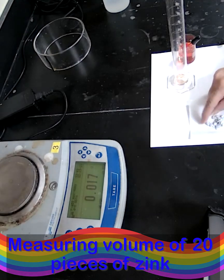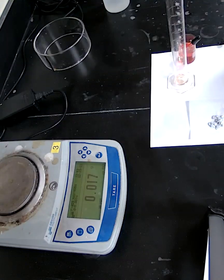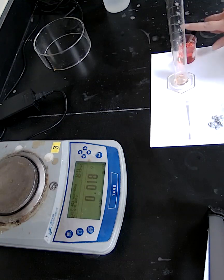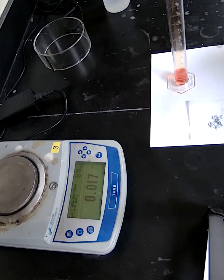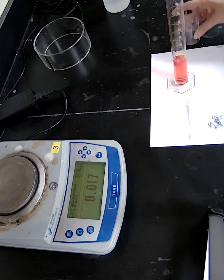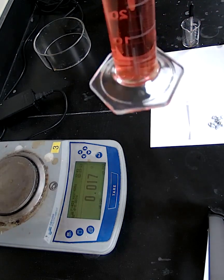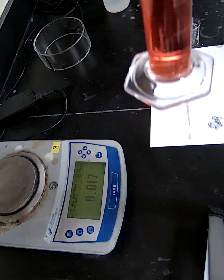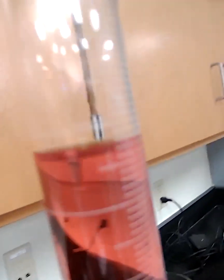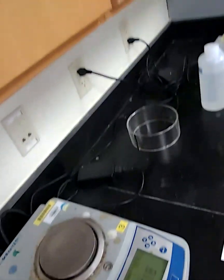To measure the volume of 20 pieces of zinc, because these are irregular shapes, use the method of measuring volume by displacement. Place a specific amount of water in the graduated cylinder and read the volume carefully. Record that volume as the initial volume of the liquid.